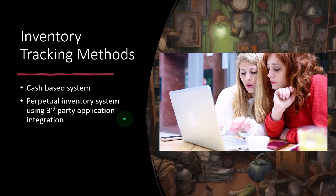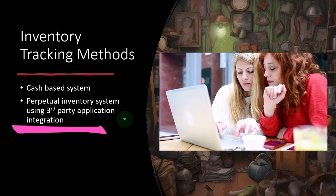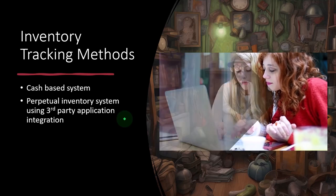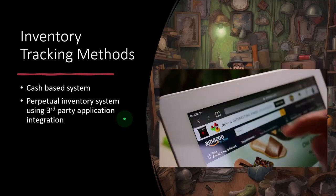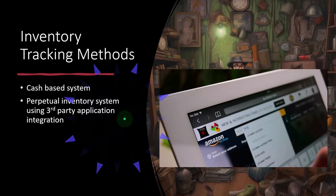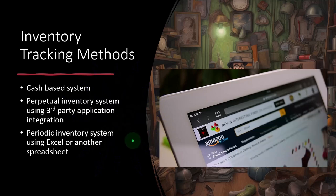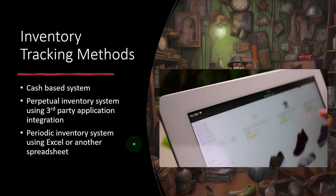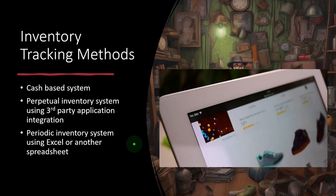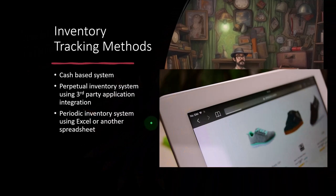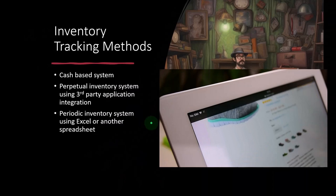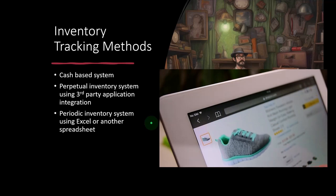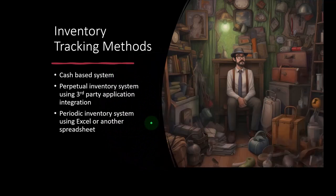We could have a perpetual inventory system using third-party application integration — pulling every transaction from platforms like Shopify and Amazon into QuickBooks and tracking on a perpetual inventory method. Alternatively, we could use a periodic inventory system using Excel or another spreadsheet to track units of inventory with a flow assumption like FIFO or weighted average, then put periodic adjusting entries into our financial statements to get ending inventory and cost of goods sold correct, without tracking units directly in QuickBooks Online.